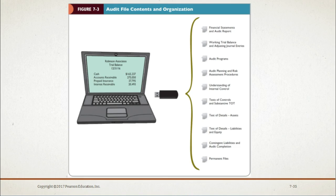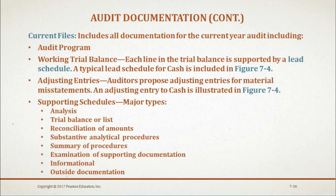Here we have an illustration of the contents and organization of a typical set of audit files. They contain virtually everything involved in the audit, including general information such as corporate data in permanent files, and current files that contain documentation of the auditor's tests, the financial statements, and the audit report. You can find Figure 7-3 on page 201 of your textbook. Current files include all documentation applicable to the year under audit, with one set of permanent files per client and a set of current files for each year's audit.